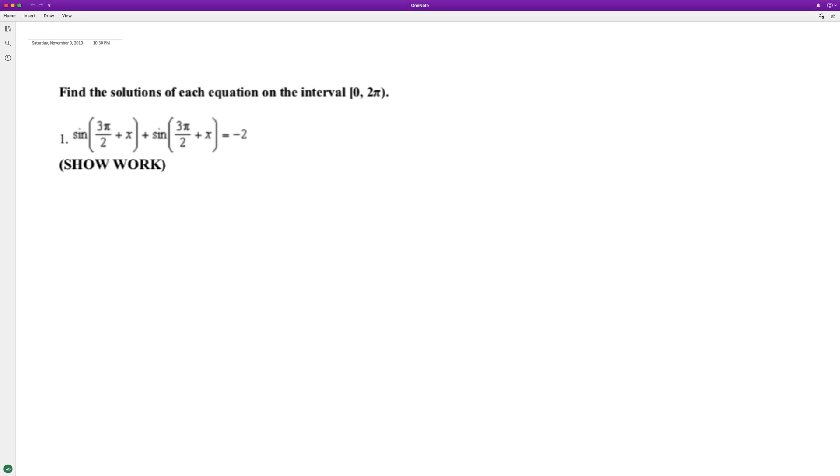We can use the addition rule here. This is the same thing as sine of 3π/2 times the cosine of x plus the sine of x times the cosine of 3π/2.